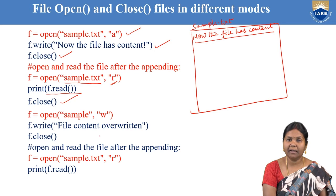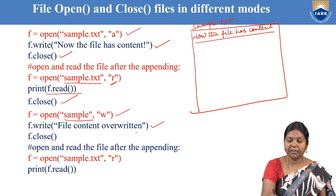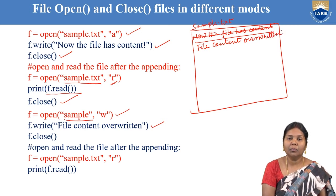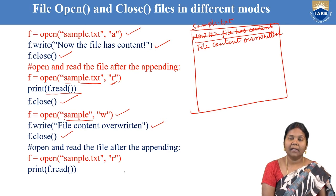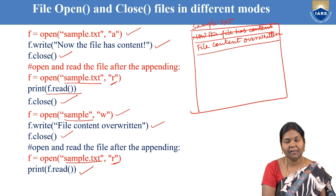Now let us work with the same file again, this time opening it in write mode. 'sample.txt' is opened in write mode, and it already contains the content written earlier. If we now write one more line using f.write() with the content 'file content overwritten', this new content will overwrite the previous content of the file. After closing the file, we open it again in read mode. Reading the file shows that the newly written content is now available inside the file. This demonstrates how a file can be opened in different modes for different operations.